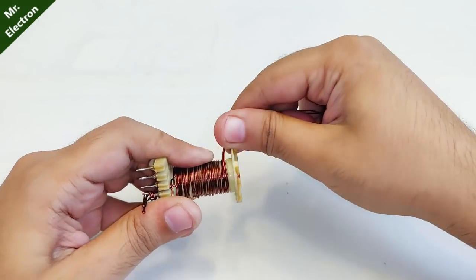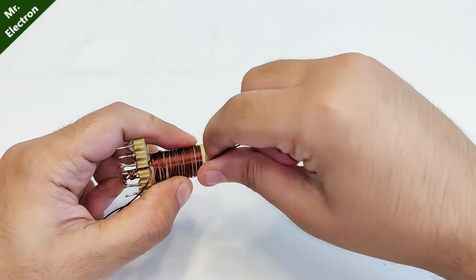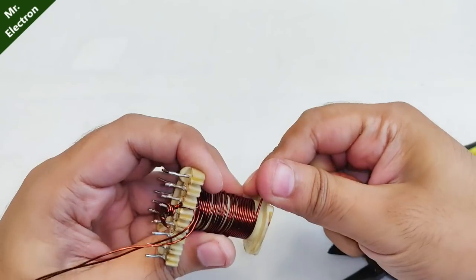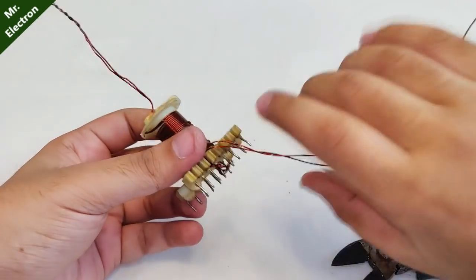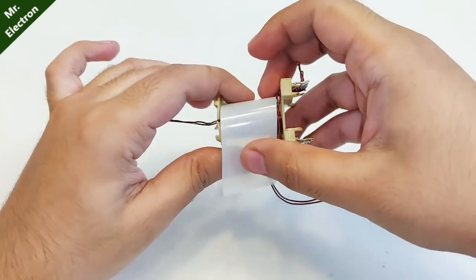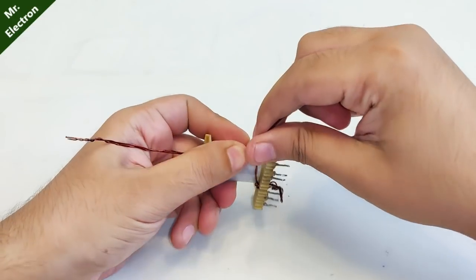I have achieved around 14 turns. After that, give a cut like this, so half of the first winding is complete. Now turn it like this, place an insulation sheet, and start your first turn.